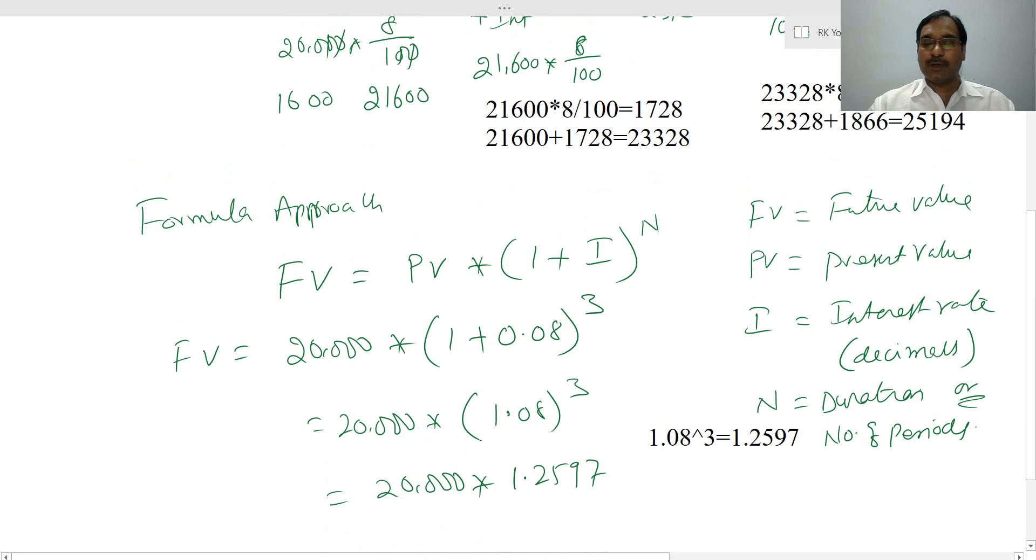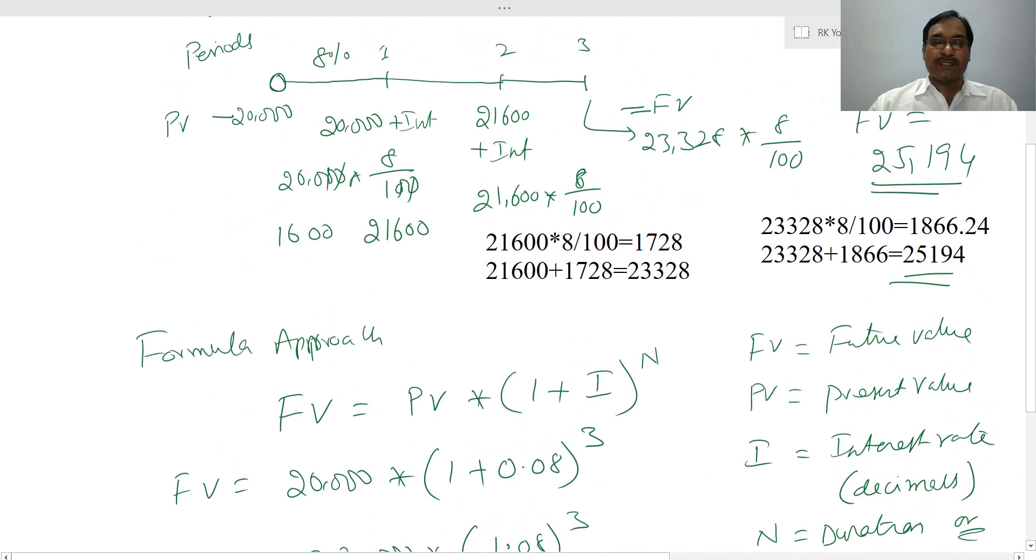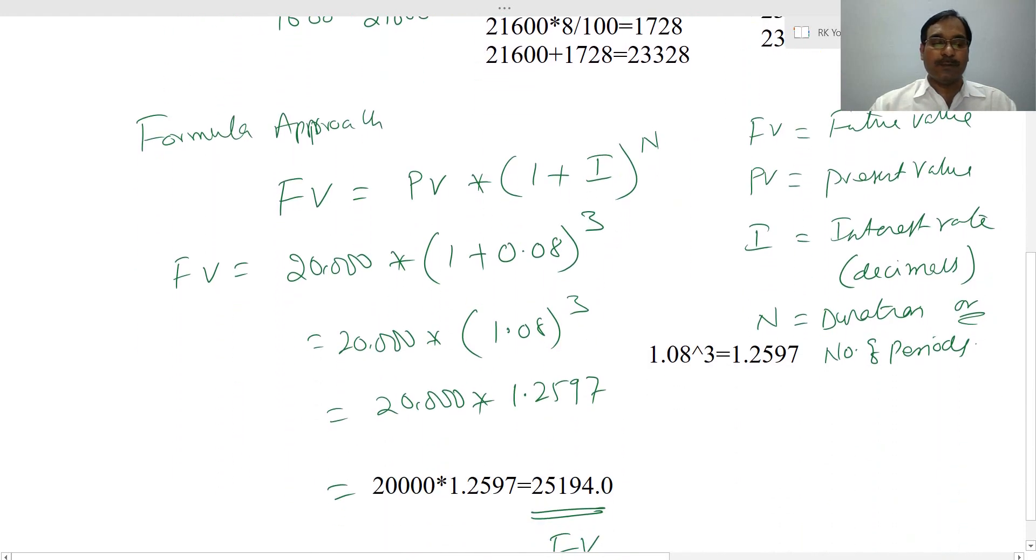How much did we get earlier? We got 25,194 earlier also. So instead of using this step-by-step method, we can use the formula approach.